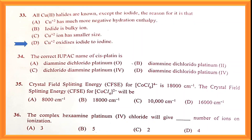Question number thirty-four: the correct IUPAC name of cisplatin. Cisplatin is diaminedichloridoplatinum(II). Option B is the correct answer.